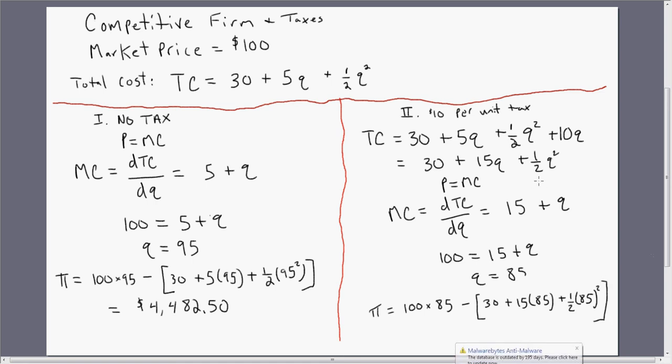So I'm just evaluating our new total cost equation at 85 units of output. And this will simplify down to $3,582.50.